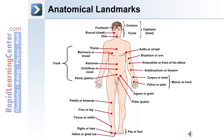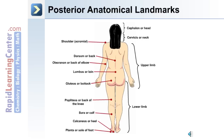The armpit is also known as the axilla, and the bicep region of the arm is known as the brachium. The antecubitus is the front of the elbow, and the antebrachium is the forearm. The manus or hand includes the carpus or wrist as well as the palm. The kneecap is also known as the patella, and the shin area is the crus. The ankle is known as the tarsus, and at the foot, the digits or toes as well as the hallux or great toe.